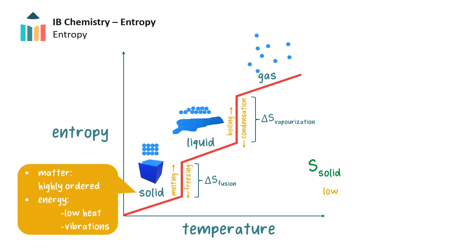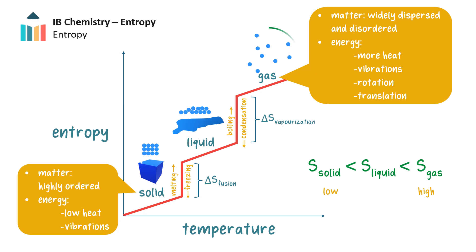For the three states of matter, solids have the most order or least dispersal of matter and energy and the lowest entropy. Gases have the highest dispersal of matter and highest distribution of forms of energy, namely heat, vibration, rotation, and translation of particles spread across various particles or regions.